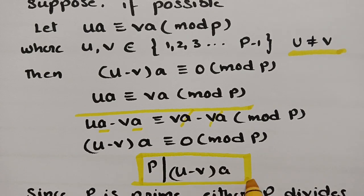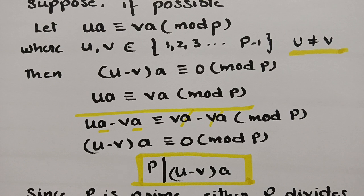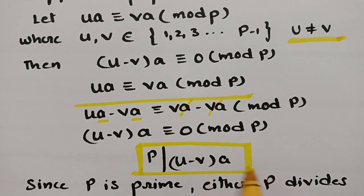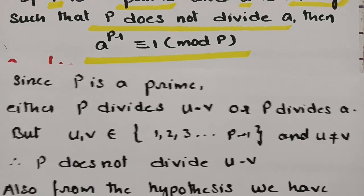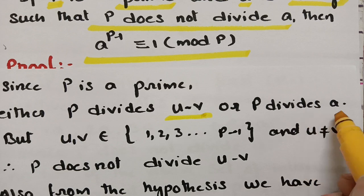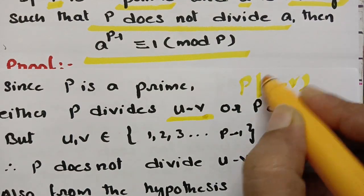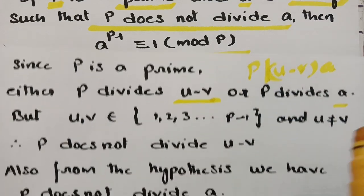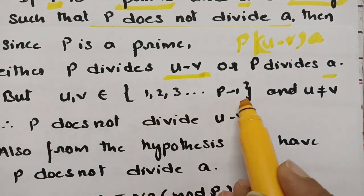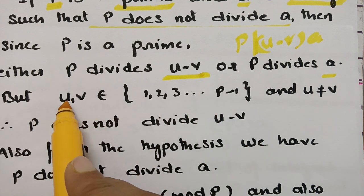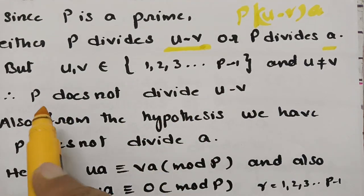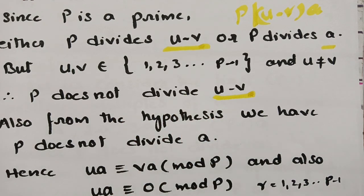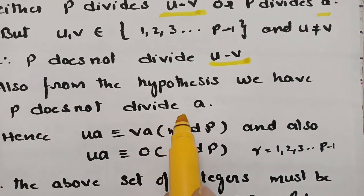So p divides (u − v)·a. Since p is a prime number, p must divide either (u − v) or a. Now, u and v are numbers between 1 and p−1, so their difference is also less than p, making it impossible for p to divide (u − v). Also, by hypothesis, p does not divide a. So there is no possibility of dividing.